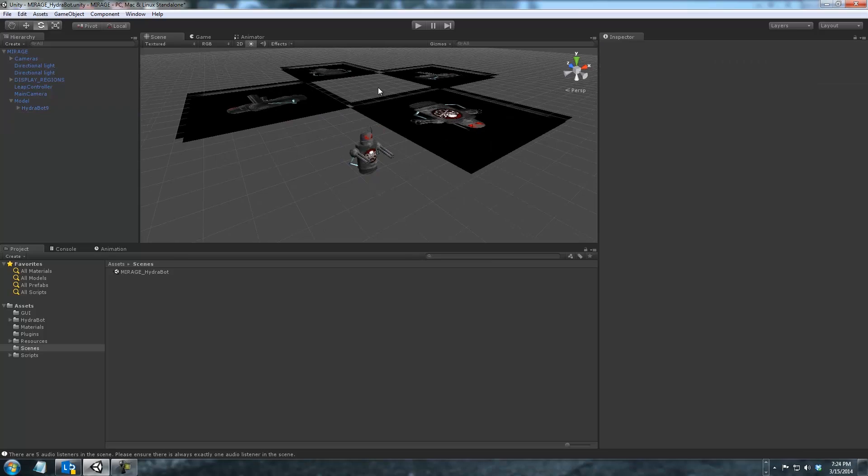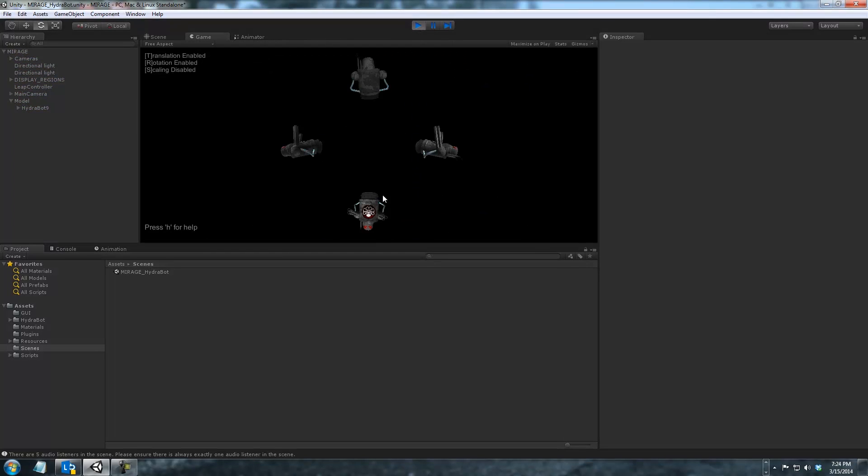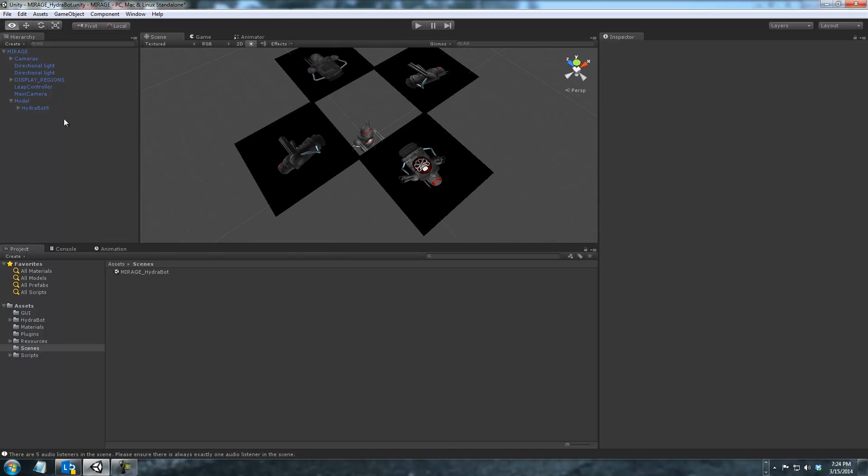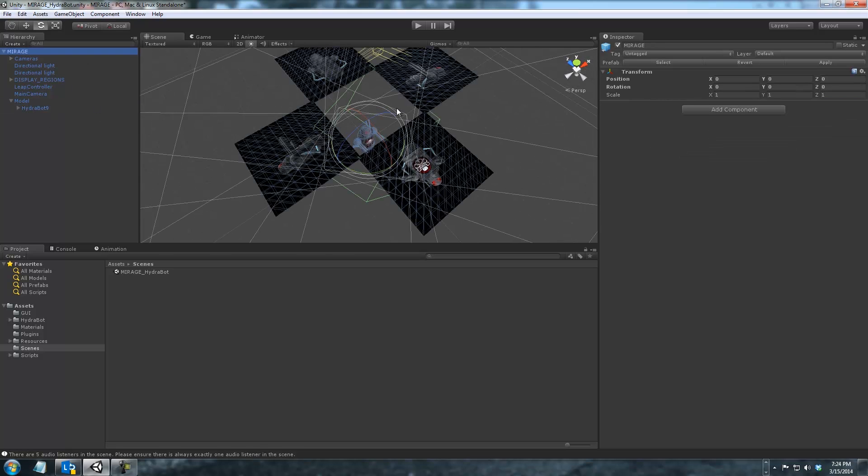Alright so the software I am using with the Mirage is Unity. So if I press play here you can see the result. This is what we are using to reflect so the Mirage would sit here in the middle and reflect these various views.